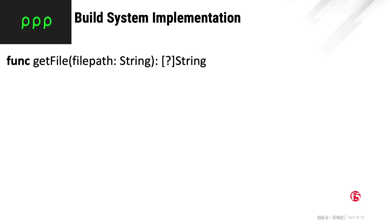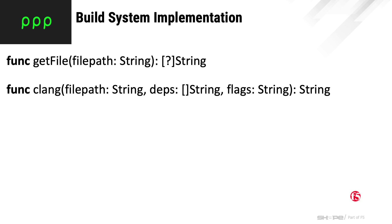Here's one of our external functions: get_file. It takes the file path of a file we want to access and produces a stream of strings as results. The stream will have a new element every time the file indicated by the file path changes — it's basically a file watcher that echoes its argument every time the underlying file changes. Then we have an external function to call the C compiler; it takes the name of a file to compile, a list of dependencies, compiler flags, and returns the name of the output file.